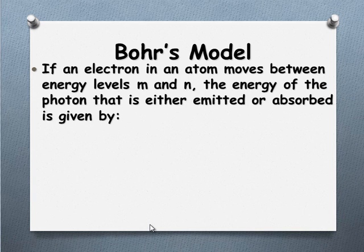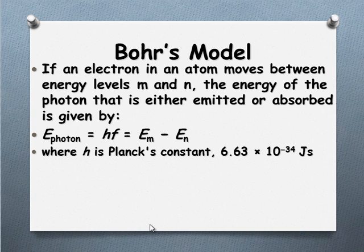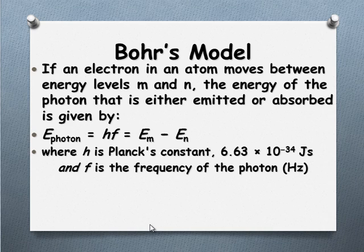Bohr's model states: if there's a series of energy levels — call them level M and level N — the energy of the photon emitted or absorbed equals hf, and this equals the energy of the upper level minus the energy of the lower level. Planck's constant h is 6.63 × 10⁻³⁴ joule-seconds, though it's commonly quoted in electron volt-seconds — either unit works as long as you remain consistent. Frequency is measured in hertz, so beware if a question gives you megahertz or another unit.